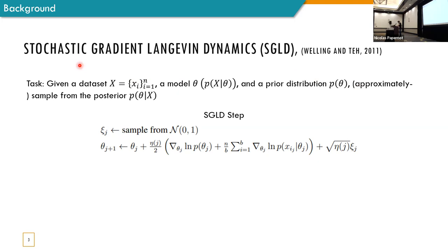And if you didn't follow, this is the important part, the task we want to use SGLD for here is as following. Given a data set, X, a model described by its likelihood in a prior distribution, we would like to sample from the posterior distribution. Okay.